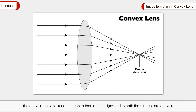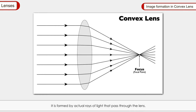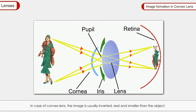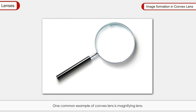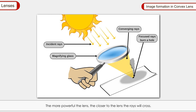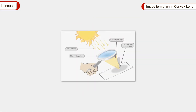Image formation by a convex lens: The convex lens is thicker at the centre than at the edges and both surfaces are convex. The image can be captured on a screen, making it a real image formed by actual rays of light passing through the lens. The image is usually inverted, real, and smaller than the object. When the object is kept too close, the image is erect, virtual, and larger. A common example is the magnifying lens — when sunlight is focused by a converging magnifying glass, it can burn paper, as rays from the sun are nearly parallel and cross at the focal point. The more powerful the lens, the closer to it the rays will cross.